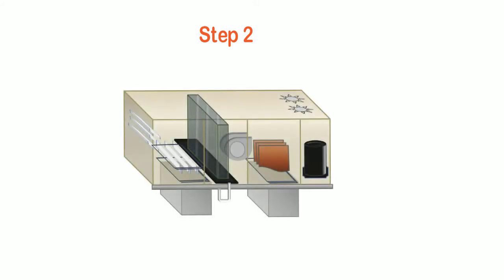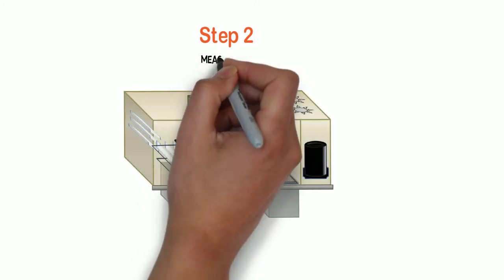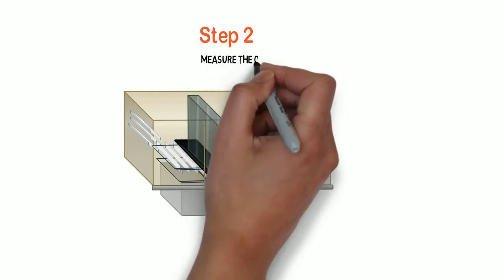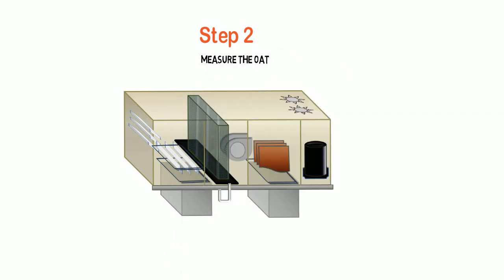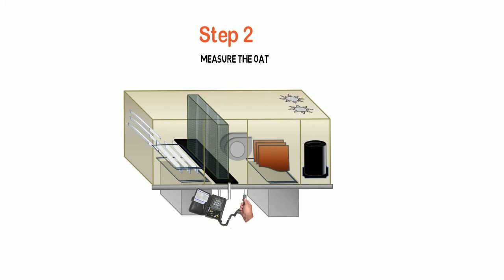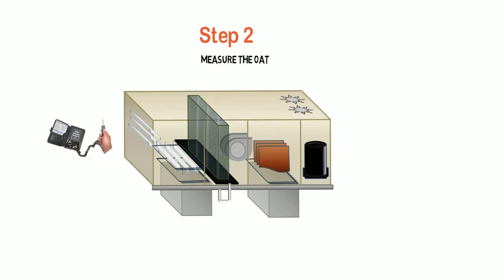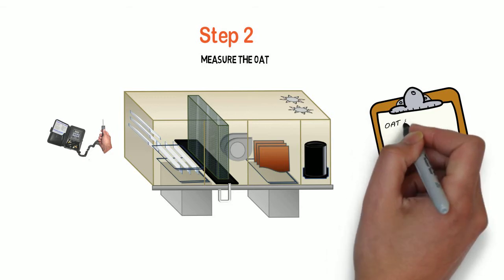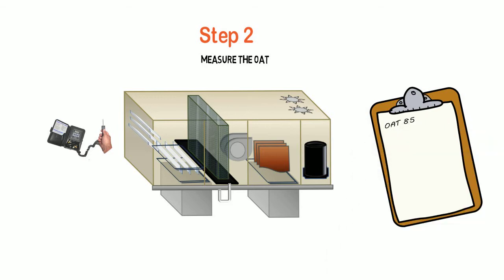Step two: we're going to measure the outside air temperature — again with the fan on — at the outside air inlet for the piece of equipment you're working on. In our case, we have 85 degrees. Write it down.